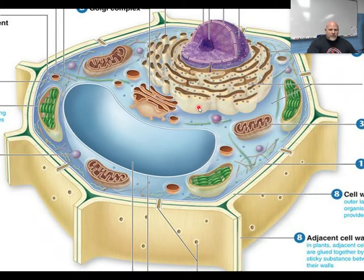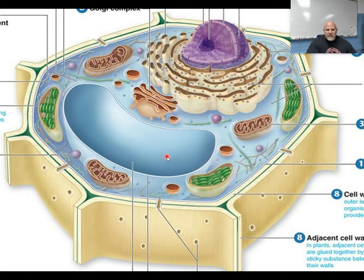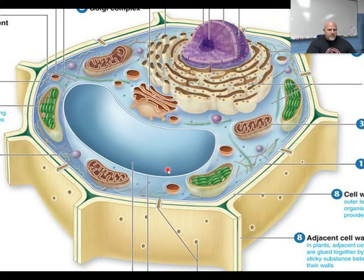In a plant cell, there are a few unique characteristics. One is they have a large central vacuole, used for storing water. Plants don't know when their next drink is going to come, so they have to take advantage of storing as much water as possible every time it rains. The central vacuole can sometimes take up as much as 80% of the cell's space as it fills with water, and it's used for storing water long term because it might not rain for two weeks.